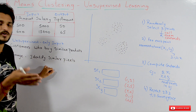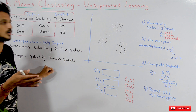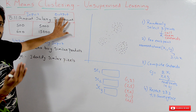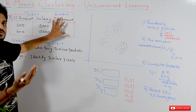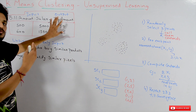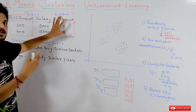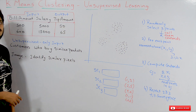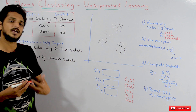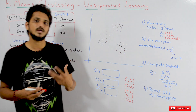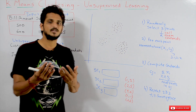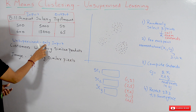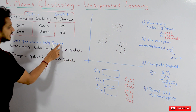In unsupervised machine learning models, we do not have this output. That is why there is no one to supervise us to find the minimum loss, which is why we call them unsupervised machine learning models. In unsupervised learning, we are having only input data.